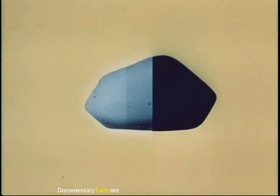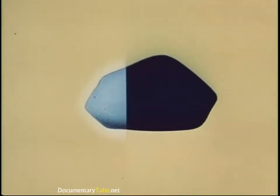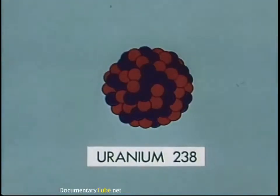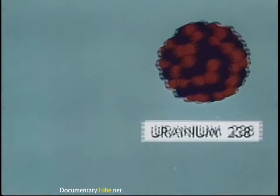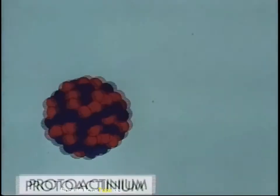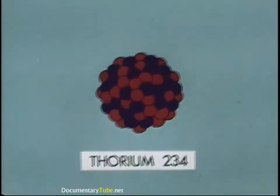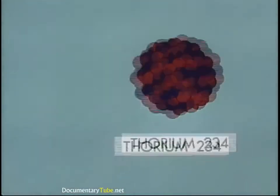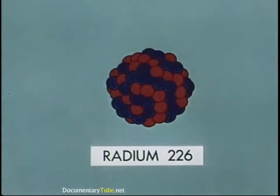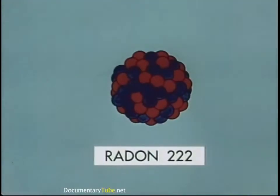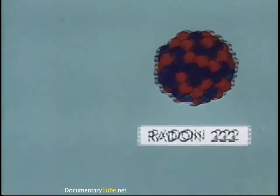The fact that some radioactive matter always remains is not so important as the time required for the half to decay. Half-life varies from isotope to isotope. It takes 4,500,000,000 years for half a quantity of uranium-238 to become thorium-234. The half-life of radium-226 is 1,600 years, that of radon is slightly less than four days, while others have half-lives of fractions of a second.